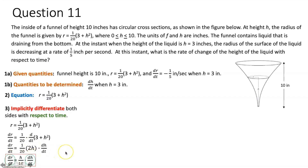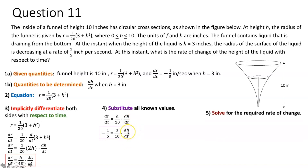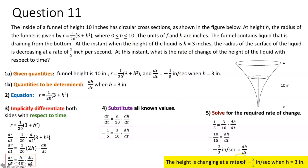Substituting known values: dr/dt equals negative one fifth and h equals 3, so negative one fifth equals 3 over 10 times dh/dt. Solving for dh/dt, we multiply both sides by 10 over 3, giving negative 10 over 15, which simplifies to negative two thirds. The height of the liquid is changing at a rate of negative two thirds inch per second when h equals 3 inches.